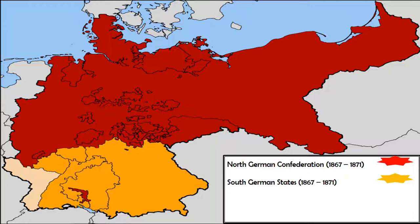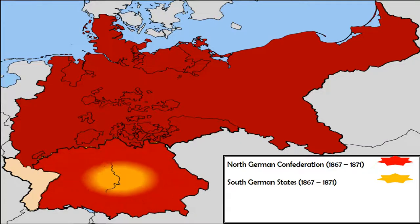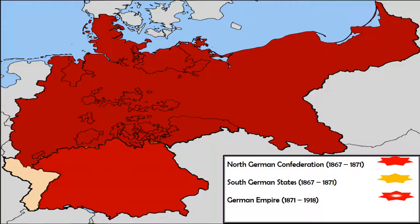As a last step in German unification, all the remaining South German states also acceded to the North German Confederation in 1871, adopting the name of the German Empire, which came under the leadership of the Prussian king. And finally, as a constitutional amendment, the German Empire was replaced with the German Republic in 1918, which we know today as Germany.